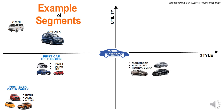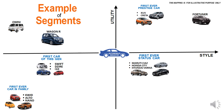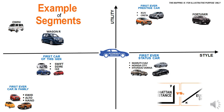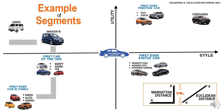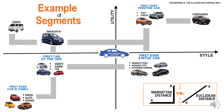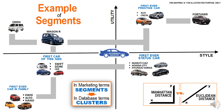The Honda City and Hyundai Verna represent the first status car. Move straight up and you reach the SUV market — the first prestige car: the XUVs, the Cretas, the Endeavors. Cut further up along the style axis and you end up with the Fortuna. What you are seeing here are nice clusters emerging with centroids separated by either the Euclidean distance or the Manhattan distance. What is emerging in this map can be called segments in marketing terms and clusters in database terms.